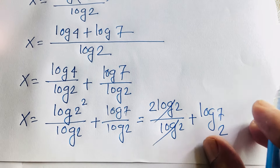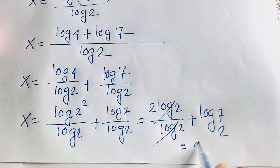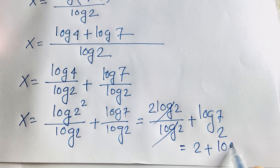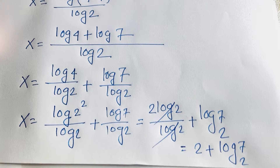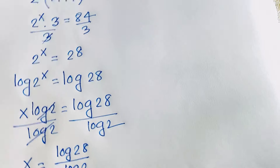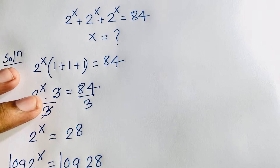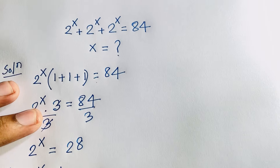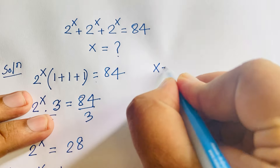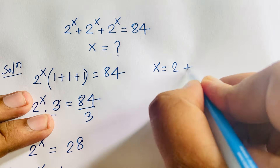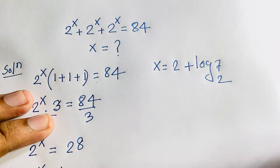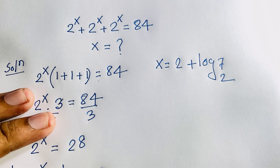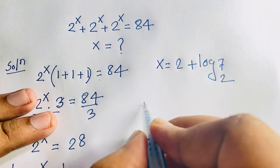Therefore, the value of x is 2 plus log base 2 of 7. This is our final answer for x in this exponential equation.